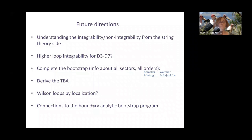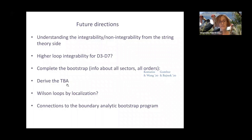Future directions include understanding integrability versus non-integrability from the string theory side — why is one D3-D7 setup integrable and the other not, and why is D3-D7 different from D3-D5? It would also be interesting to check whether higher-loop integrability holds for D3-D7, and to complete the bootstrap to extract information about all sectors and all loop orders. Derivation of the thermodynamical Bethe ansatz for these setups is still missing, and one could hope to compute Wilson loops by localization and connect to the boundary analytic bootstrap program.